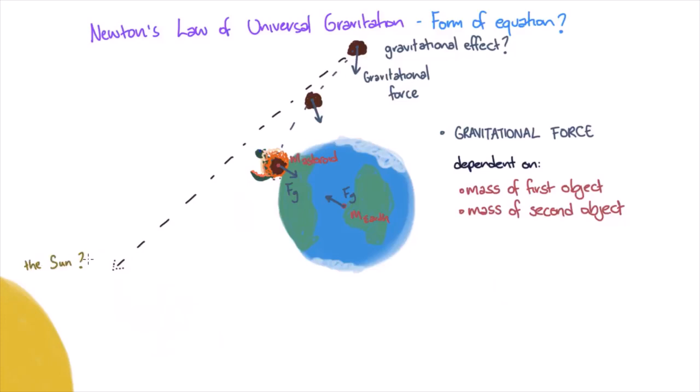The reason the Sun may play a lesser role in determining the force acting on the asteroid is its distance. So we can guess that the closer two objects are, the stronger the gravitational force between them. The Sun is so much bigger than the Earth that the distance must be very important.